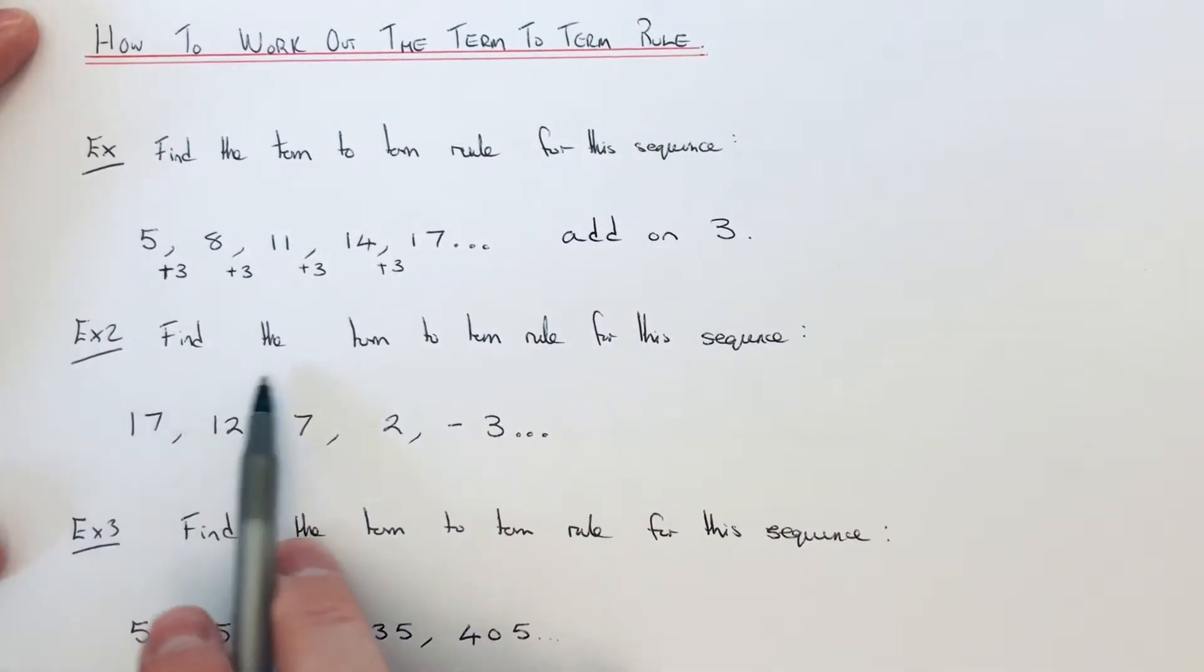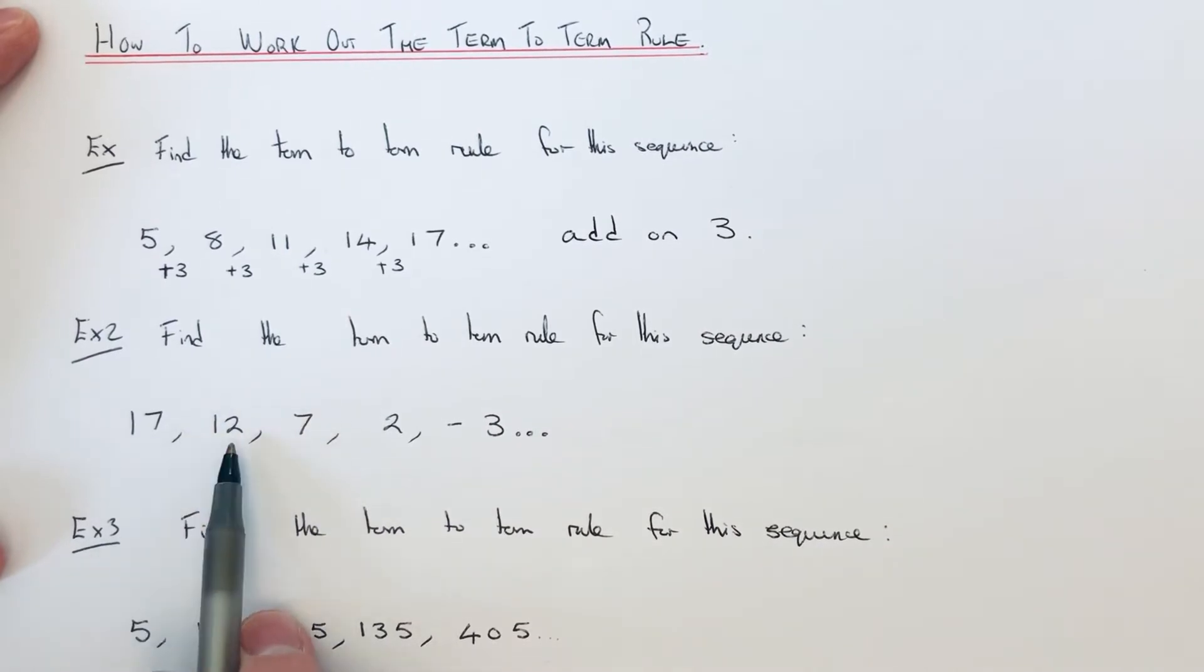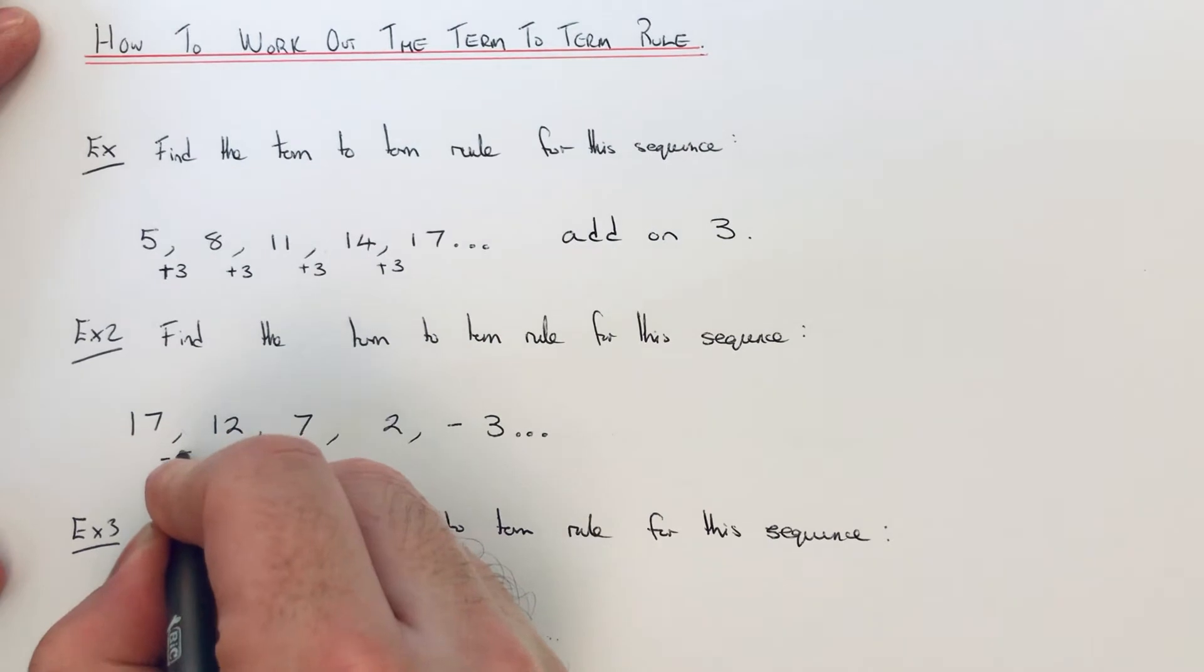So let's have a look at the second example then. So this time you have a sequence which is going down. So it looks like we're taking something off to give the next number in the sequence. So the difference between 17 and 12 is 5. So that's minus 5.